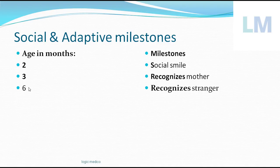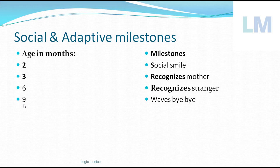Six — S-I-X — yes, for stranger. It recognizes the mother at three months and recognizes strangers at six months. At nine months, the child waves bye-bye. To remember: imagine a working mother who has to leave for work at around nine o'clock — the child starts waving bye-bye at nine months of age, as if knowing the mother is going to work.